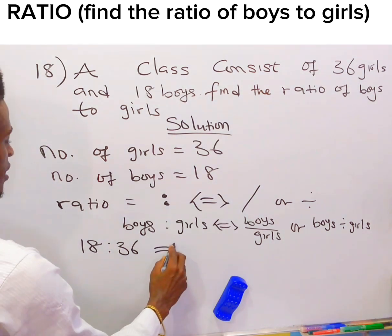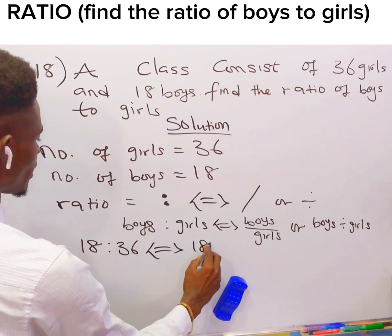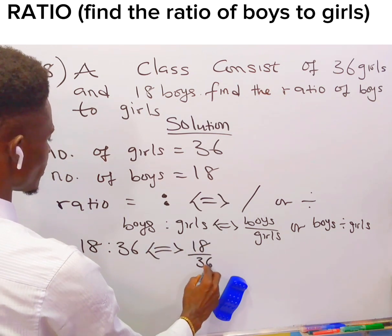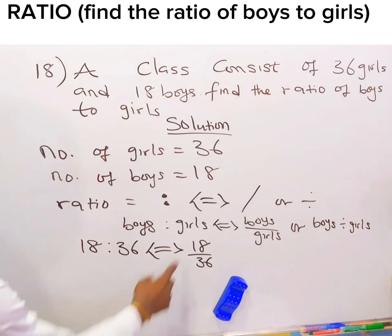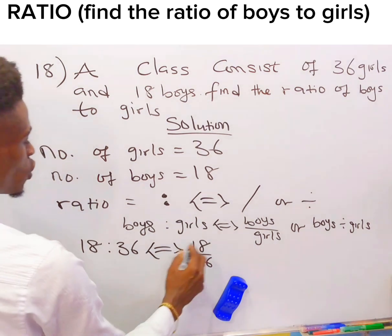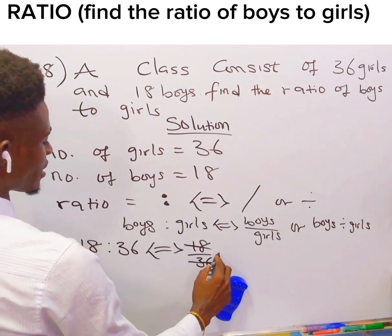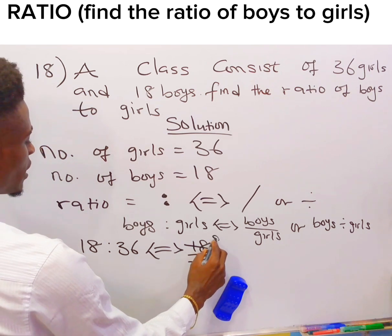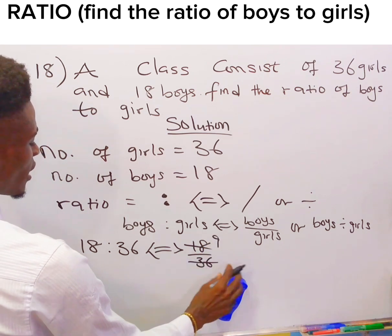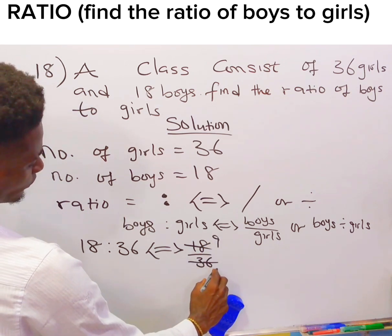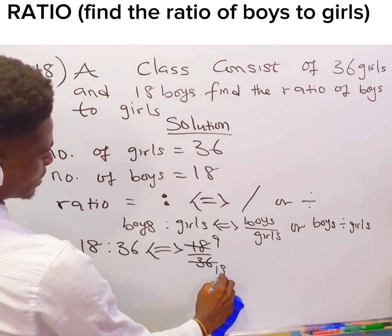And 18 ratio 36 is the same thing as 18 over 36. Now, let's divide 18 by 36. 2 can divide 18 and 2 can divide 36. 2 in 18 is simply 9, and 2 in 36 is 18.